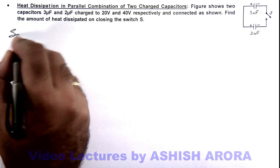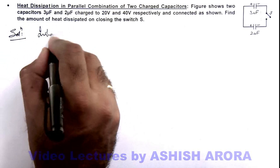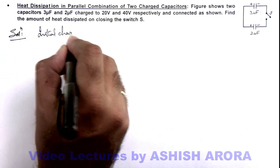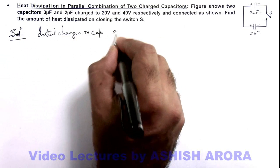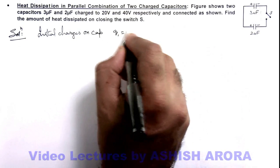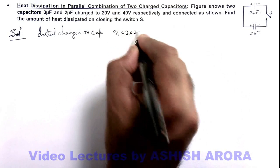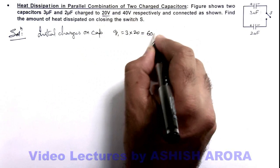First, we calculate the initial charges on capacitors. Charge on the first capacitor, 3 microfarad, will be CV, that is 3 × 20, because it is charged to 20 volts. This equals 60 microcoulombs.